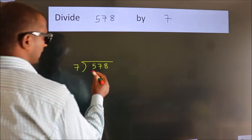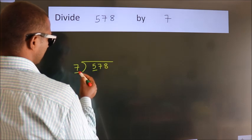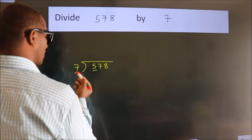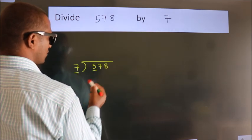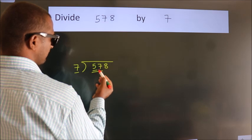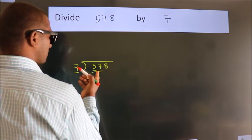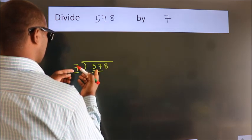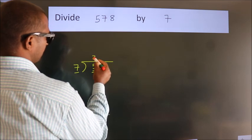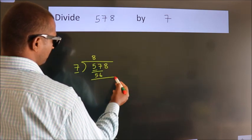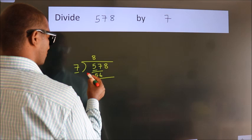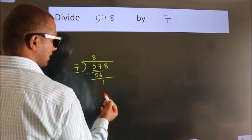Next, here we have 5, here 7. 5 is smaller than 7, so we should take two numbers, 57. A number close to 57 in the 7 table is 7 times 8, which is 56. Now we subtract and get 1.